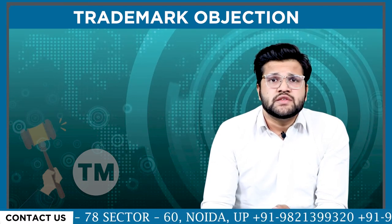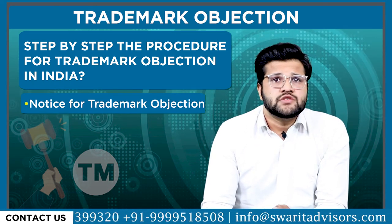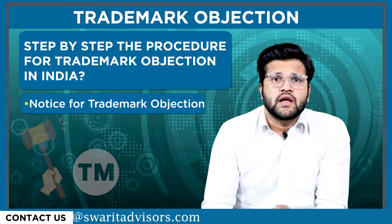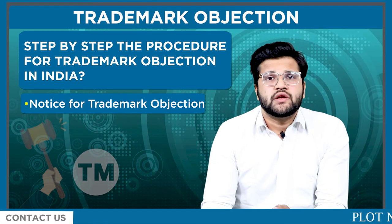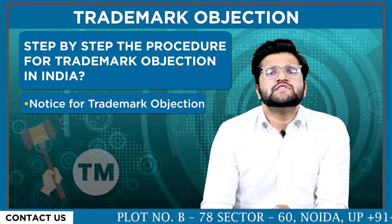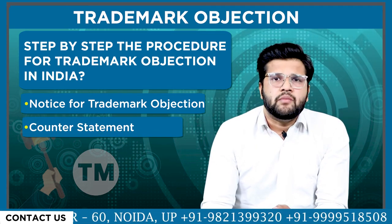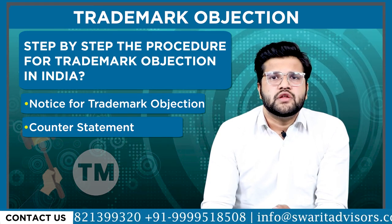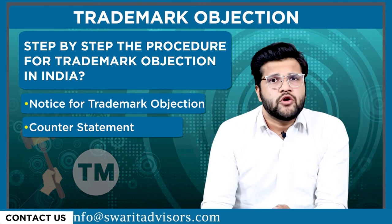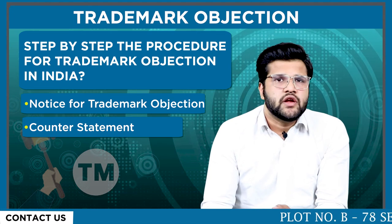So now let's understand step by step the procedure for trademark objection in India. The first step is the notice for trademark objection, which should be filed by any person after the trademark has been advertised and published in the Trademark Journal within four months from the date of advertisement. The second step is the counter statement — the applicant can file for the counter statement within two months from the date of receipt of notice of trademark objection. If not done so, the applicant is deemed to have abandoned the trademark application.